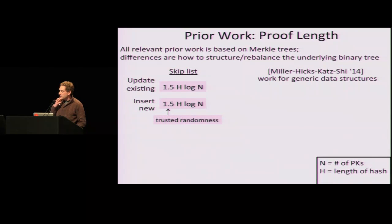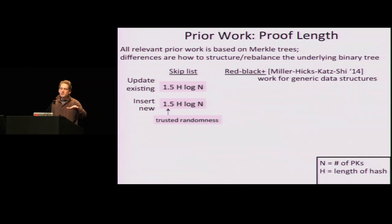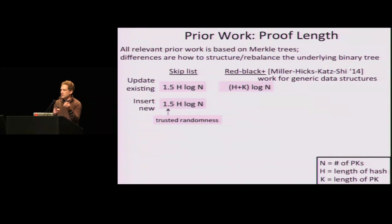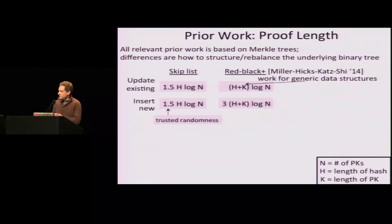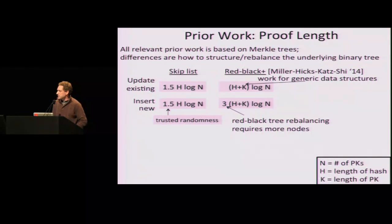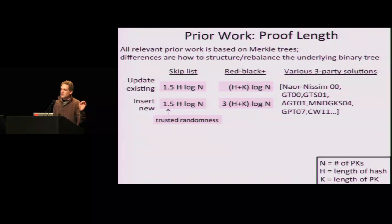There is an approach by Miller, Hicks, Katz, and Shee from 2014 which works for generic data structures — a beautiful paper that can turn any data structure into a two-party authenticated one. They implement red-black trees plus (all relevant data pushed to leaves), achieving H + K log(N) proof length, where K is the length of the public key. So you essentially double the optimal. Considerably worse is the insertion of new things — worse by a factor of three — because red-black tree algorithms require many more nodes. There's also a ton of work on three-party solutions, but they don't allow the verifier to compute the new root, so they don't work for us.